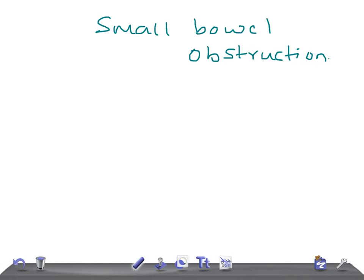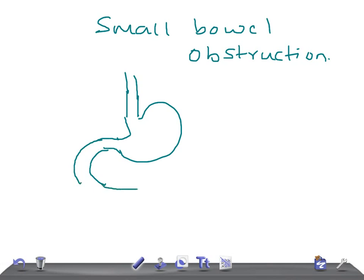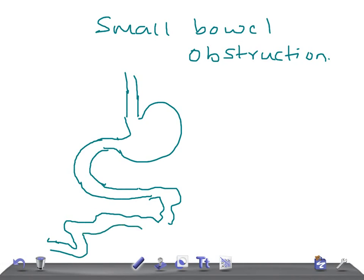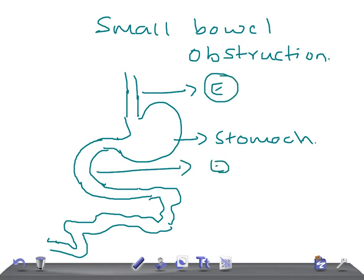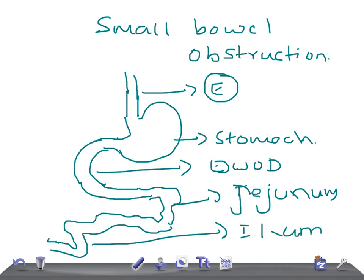To understand what small bowel obstruction is, we first need to understand the small bowel. From the esophagus we have the stomach, and from the end of the stomach there exist three main parts of the small bowel: the duodenum, then the jejunum, and then the ileum. The duodenum, jejunum, and ileum together are called the small bowel.